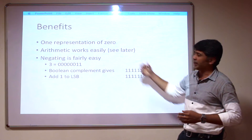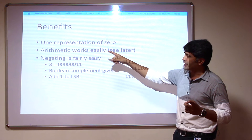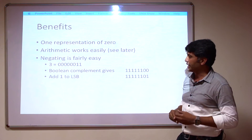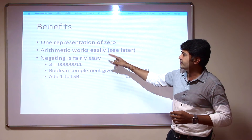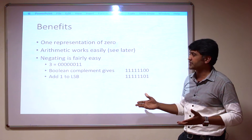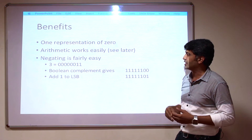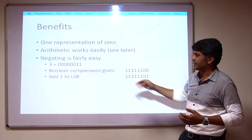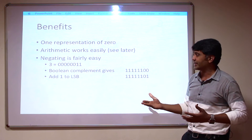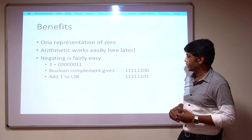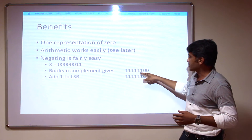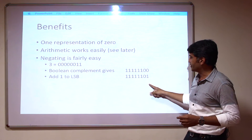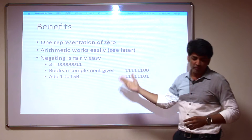On the next slide we will see the benefits of 2's complement. First benefit is a single representation for 0, which is the major benefit. Second, arithmetic works easily — the arithmetic operations are a little bit easier with 2's complement. Third, negation is fairly easy: take the Boolean complement bitwise, then add 1 to the least significant bit, and you get the negated value such as minus 3.